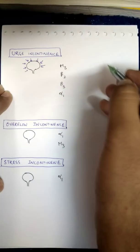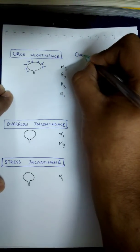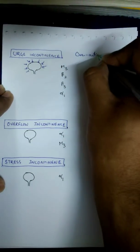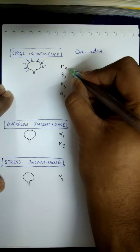That's why this is also called overactive bladder. To treat this overactive bladder, you decrease the contraction (M3) and support the relaxation (beta 2 and beta 3 agonist).